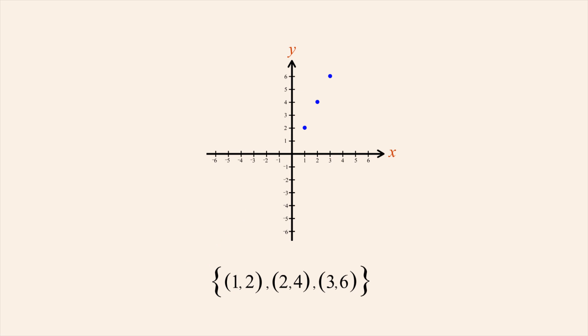Defining a function by listing all the ordered pairs in its graph is only practical if there are a reasonably small number of ordered pairs. So how do we define functions which consist of an infinite number of ordered pairs?